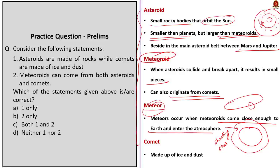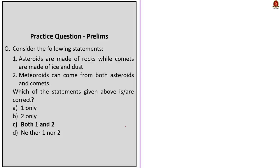Comets are made of ice and dust and orbit the sun like asteroids. As a comet's orbit takes it closer to the sun, the ice and dust vaporize, creating a visible tail. Meteorites are meteoroids that survive their trip through Earth's atmosphere and land on the planet's surface. Statement 1 — asteroids are made of rocks and metal while comets are made of ice and dust — is correct. Statement 2 — meteoroids can come from both asteroids and comets — is also correct. The answer is Option C: both 1 and 2.